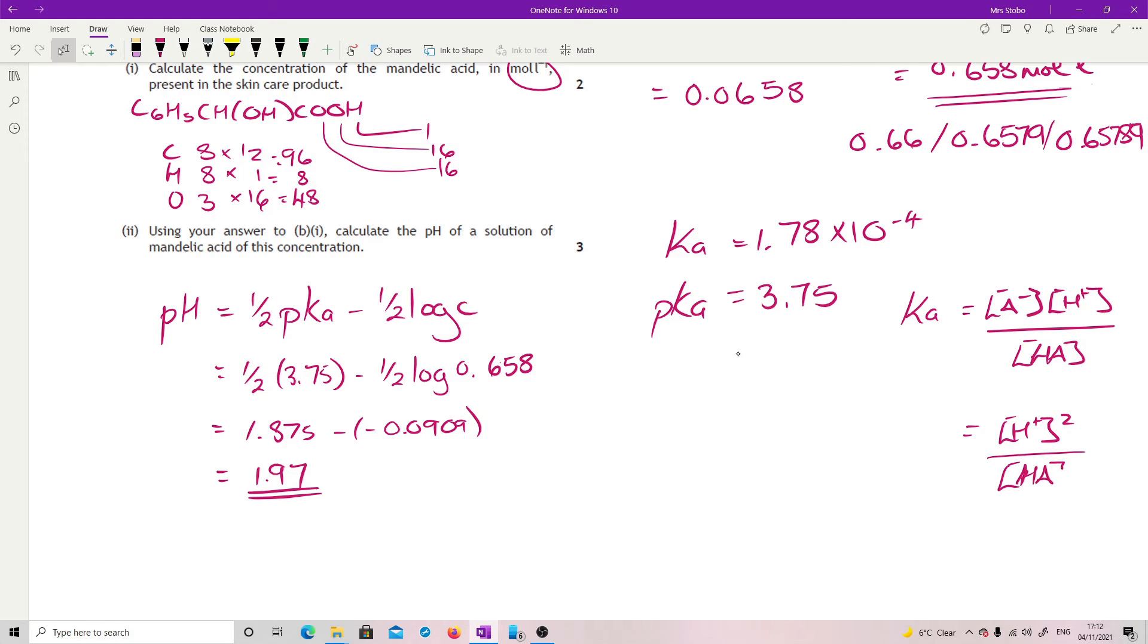So you're expected to be able to work that if you want to use it. So to rearrange that, you would say that H plus is equal to the square root of Ka multiplied by the initial concentration of the acid. And that will give you exactly the same answer. It will give you 1.97. Entirely up to you which one you prefer to use. I see I'm going with a half pKa one. And that's us.